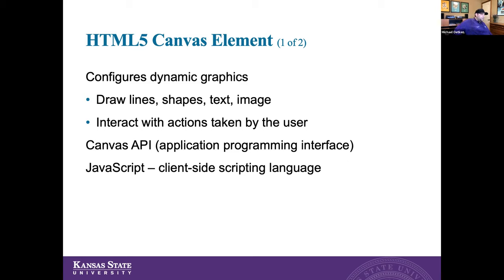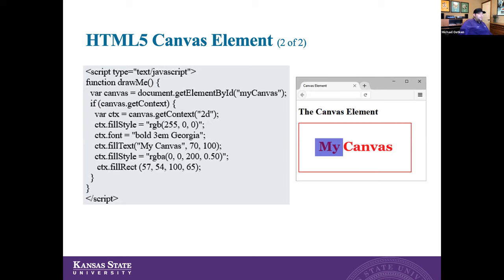The canvas element — you can draw lines, shapes, and manipulate text and images using the canvas API along with JavaScript to create interactivity. This is an example here — in the syntax you'll notice our JavaScript script element using a function like 'drawMe'. We're creating our canvas and have variables for embedding fonts, different shapes, and colors. As we get more complex, we can add in buttons and functions and math to where you could basically create some simple interactive games using the canvas.